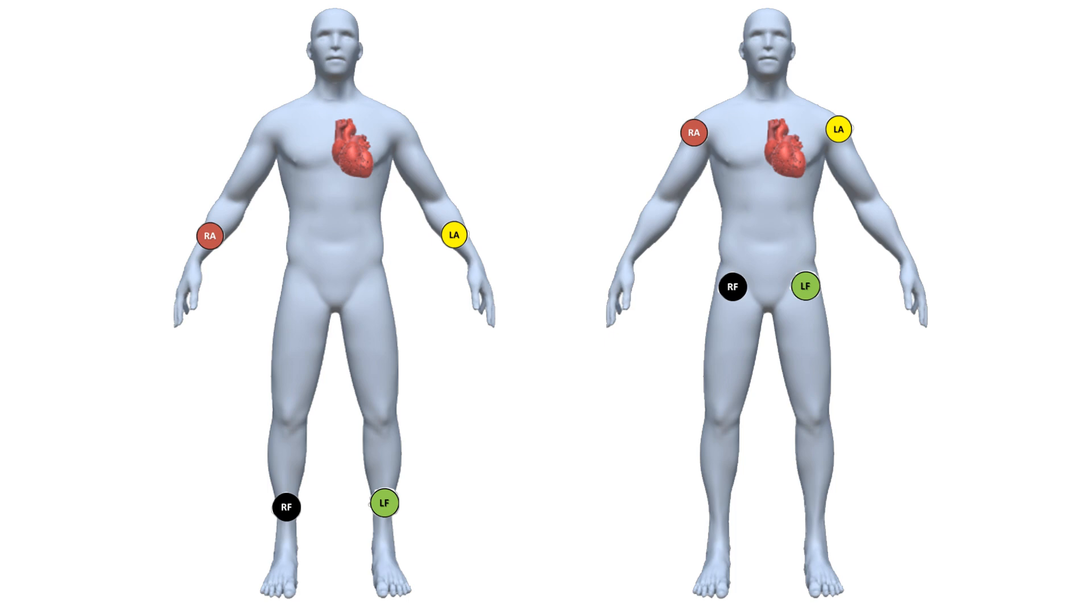Limb electrodes should be placed distally to the shoulders and hips, although it's not necessary to place them as far distal as the wrists and ankles.